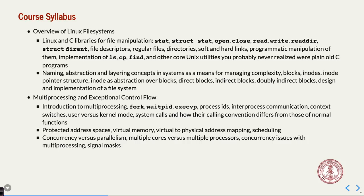The first thing we're going to talk about starting today is Linux file systems — how file systems actually work and some of the different system calls we'll use. A system call is basically a function that ends up getting run by the kernel, which is run by the operating system. Your program does its thing and then does a system call into the kernel, and the kernel handles everything that touches the system — like files and networking. We'll also talk about inodes, which are the way the computer keeps track of your files.